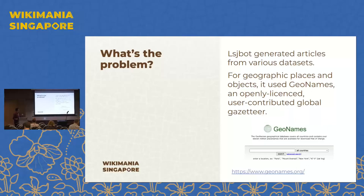LSJBOT used various data sources to generate these articles for geographic places, including a site called GeoNames, which is an openly licensed, user-contributed global gazetteer released under a Creative Commons license. It's free, covers the whole world, and it's an amazing resource. This is not a criticism of LSJBOT, of GeoNames, of Cebuano Wikipedia — it's more a cautionary tale about the perils of doing large imports or bot generation without taking a bit more care.